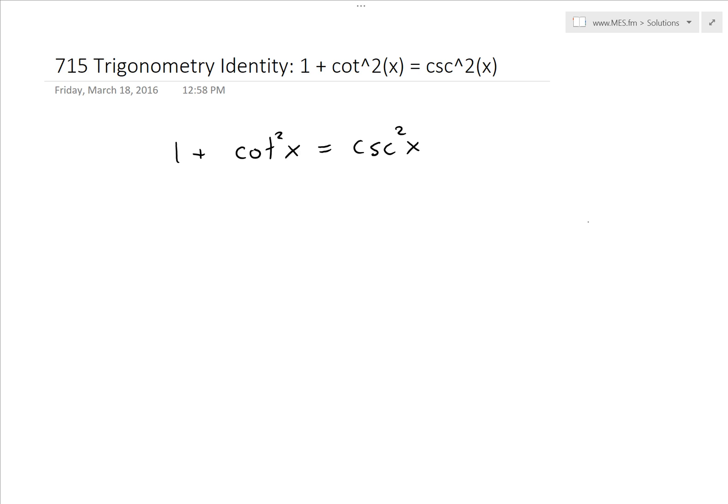Hi, it's time for another math easy solution to discuss further into trigonometry and look at another trigonometry identity, which is this one: 1 + cot²x = csc²x. Now I haven't used this identity too much before, but I thought I would go over it for completeness sake.